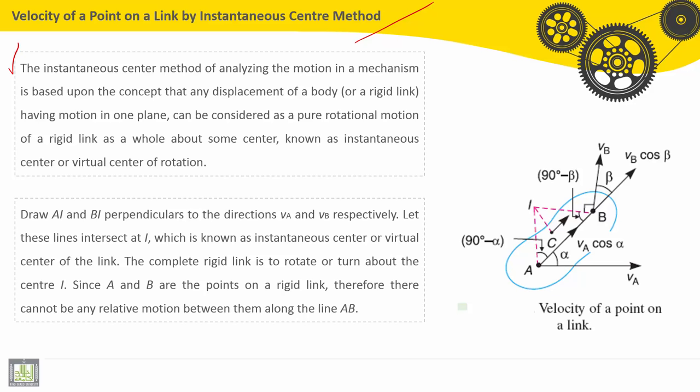The instantaneous center method of analyzing the motion in a mechanism is based upon the concept that any displacement of a body or rigid link, also called solid, having motion in one plane can be considered as a pure rotational motion of a rigid link as a whole about some center known as instantaneous center of rotation or virtual center of rotation. So if we have the rigid body, this is the rigid body solid, and we have two points fixed on this solid or this rigid link, how to find I, the instantaneous center of rotation?